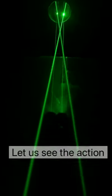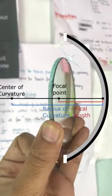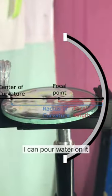In today's video, let's see the action of concave mirrors. Concave mirrors have an inner curved reflective surface. It is curved so much that I can pour water on it.